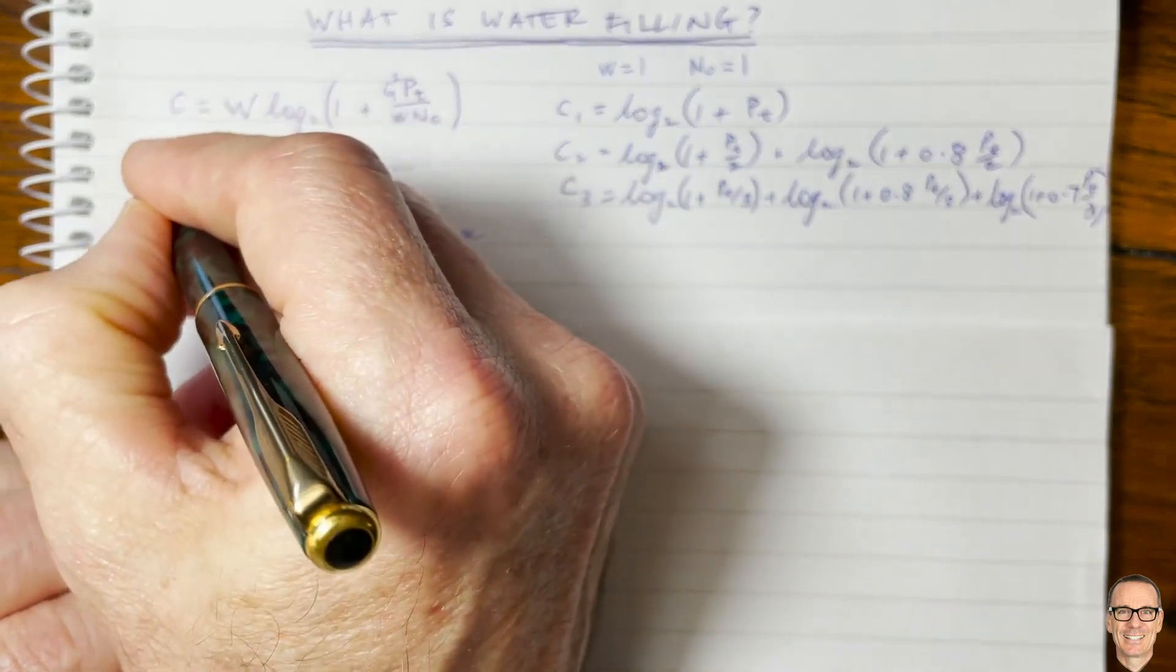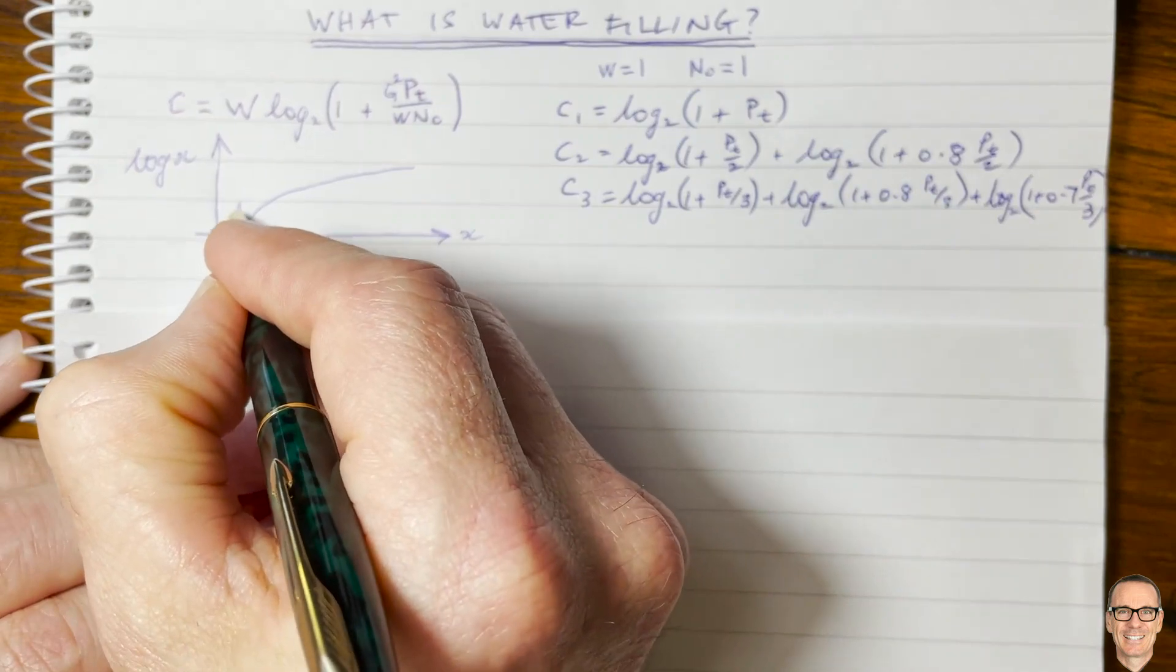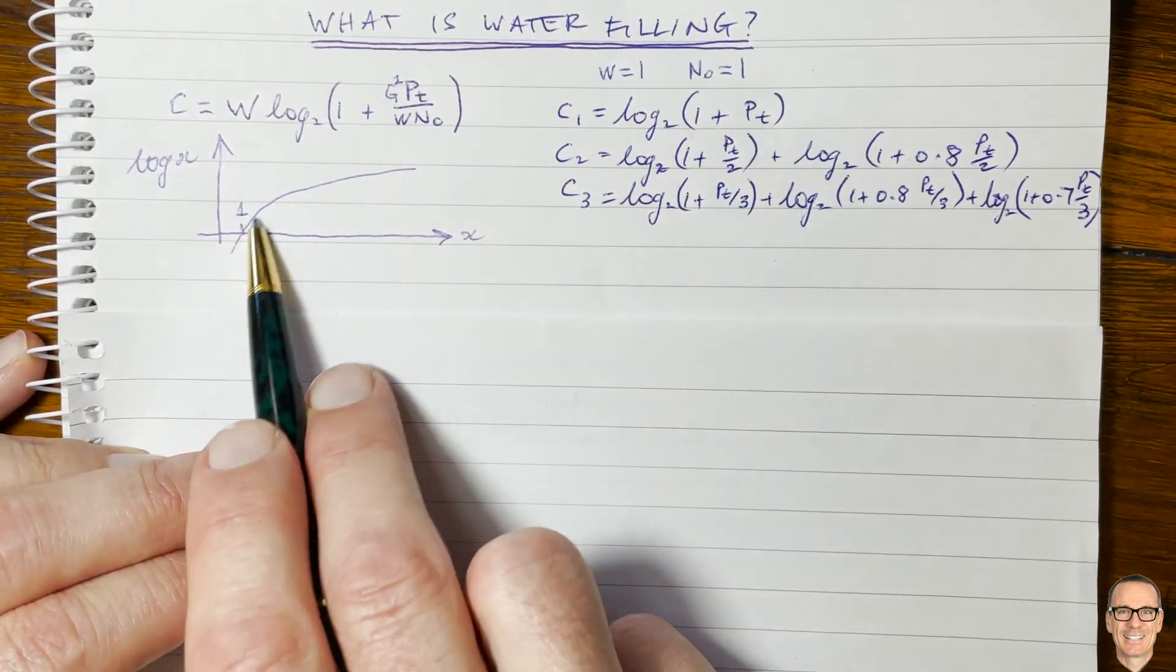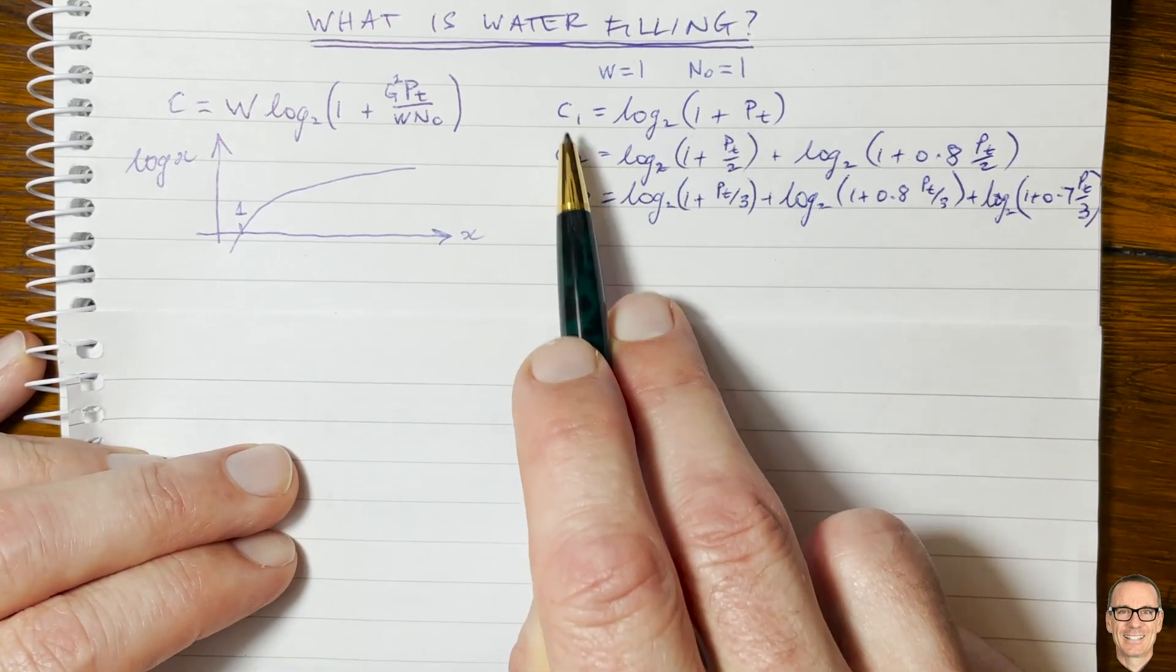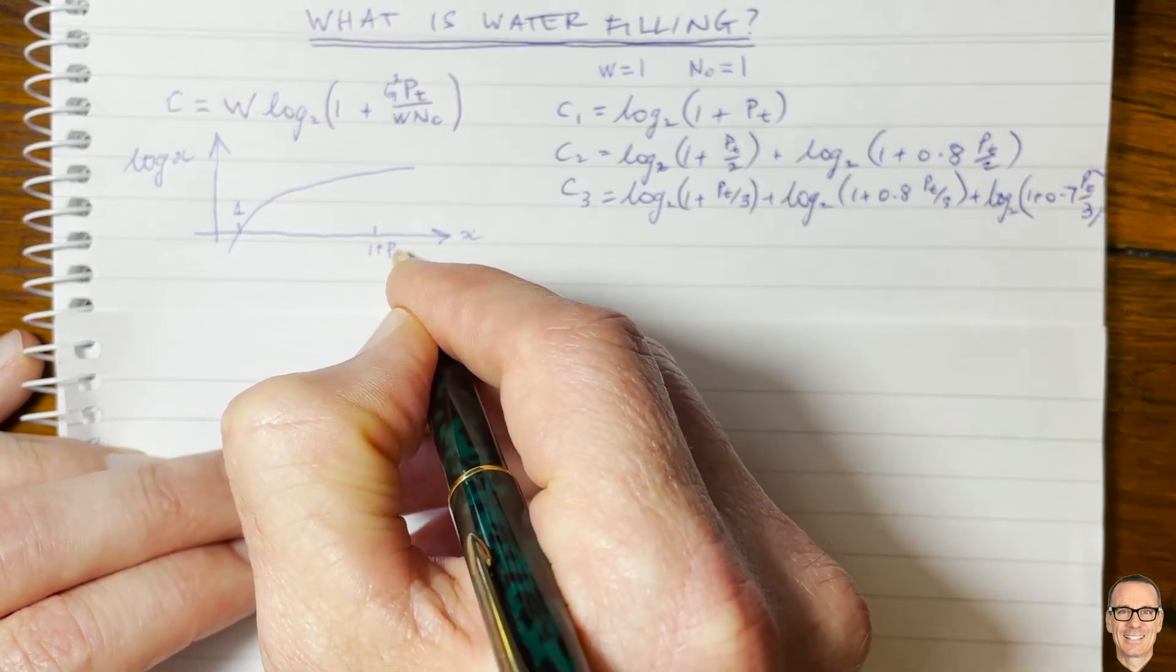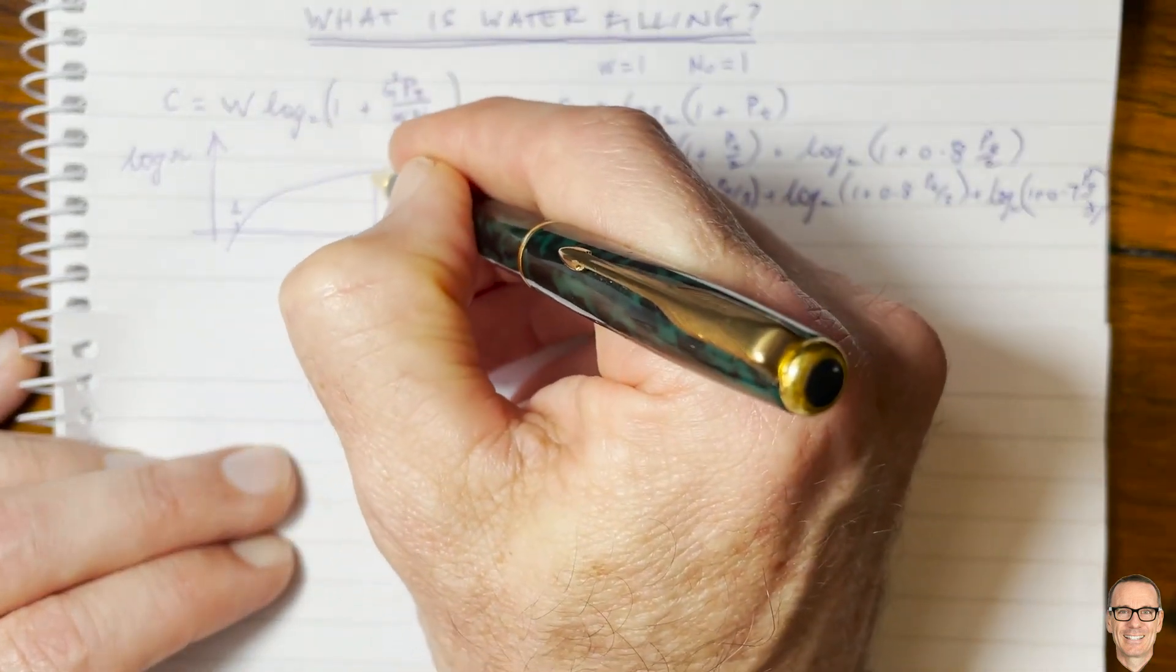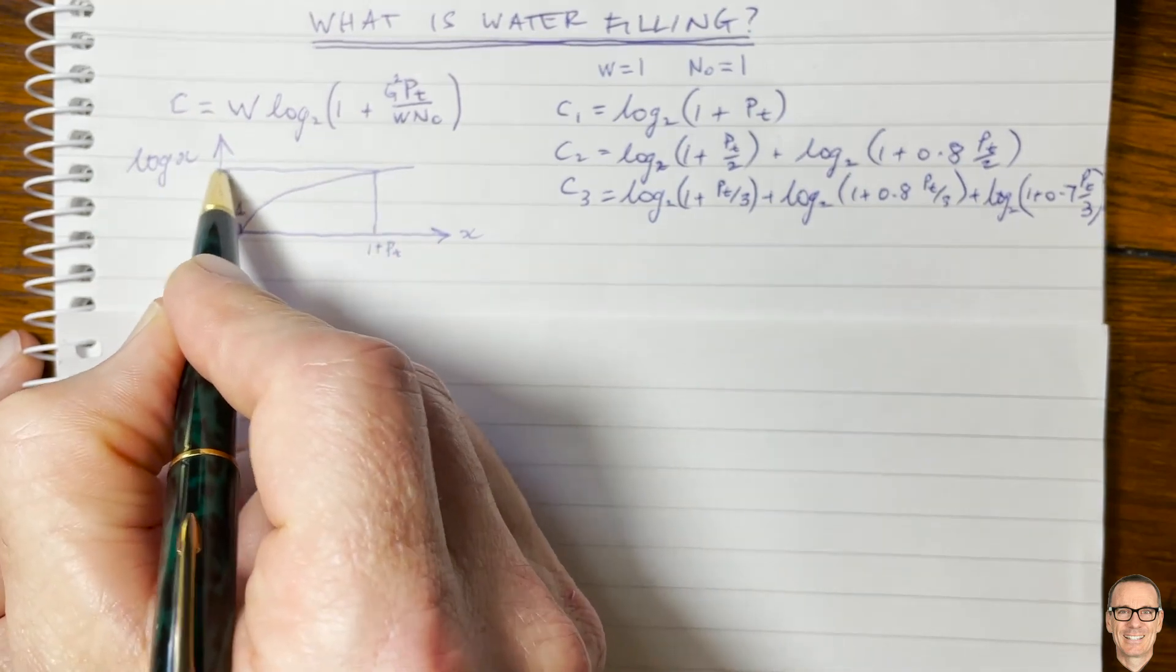So the log function looks like this. It's a function that rises and then flattens off. So this is x, this is log of x, and this crossing point here is 1, and that's important because we've got 1 plus power, and it matches up with this log function. So what are we comparing when we compare c1 to c2? Well for pt, let's say this value here was 1 plus pt, for example. Then the log function says the capacity you get if you put all your power in that one sub-channel, this is going to be the capacity.